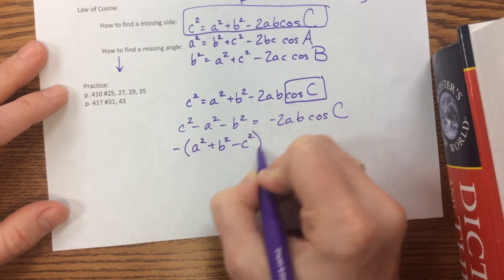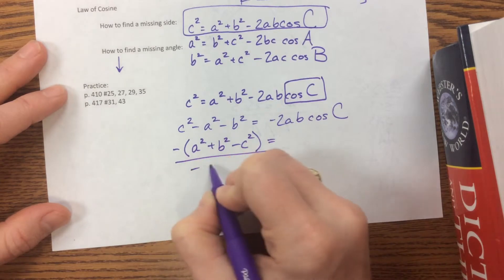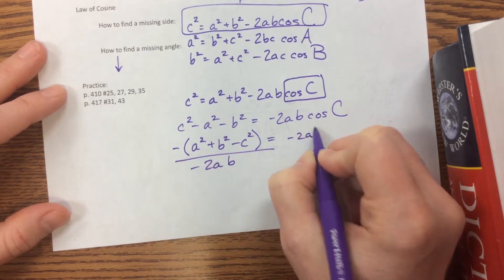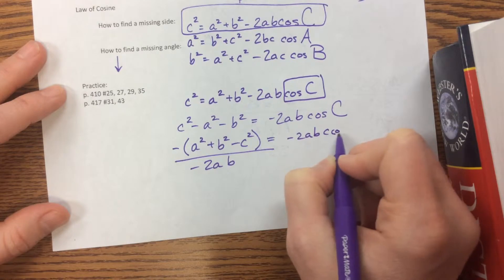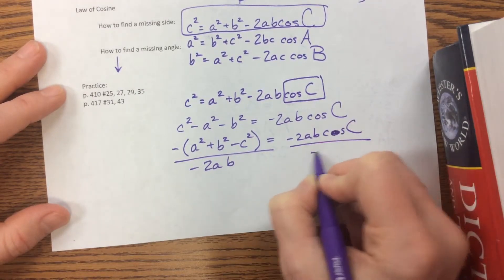and the c squared becomes negative, and that's equal to, well, and then I'm going to, sorry, at the same time, I'm going to divide by negative 2ab. Oh, that's too many letters. Okay, so sorry. Cosine c, there we go. Divided by negative 2ab.